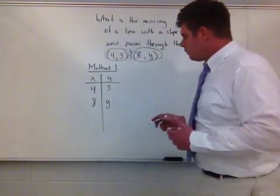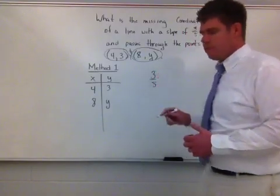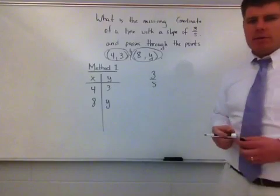So here I go. I've now got this part, and I know my slope is going to have to be 3 fifths. Well, if my slope has to be 3 fifths, then the ratio